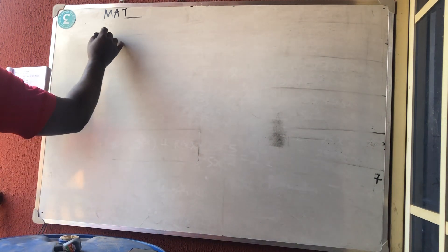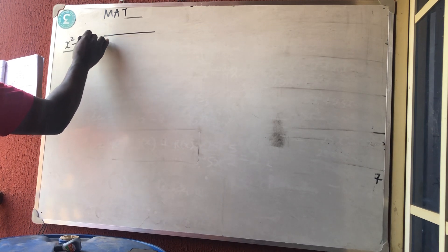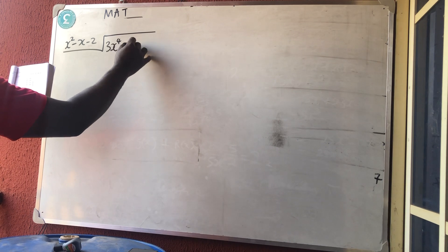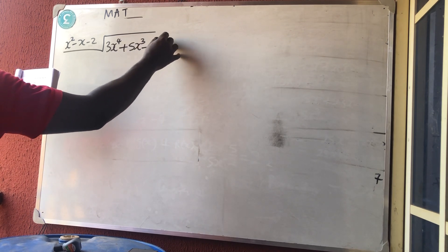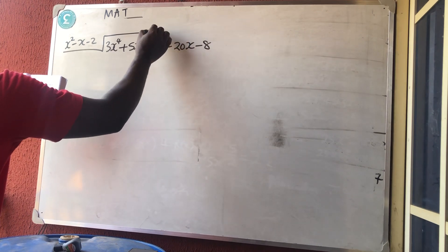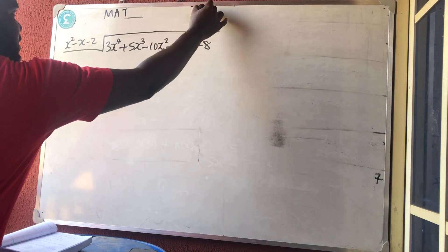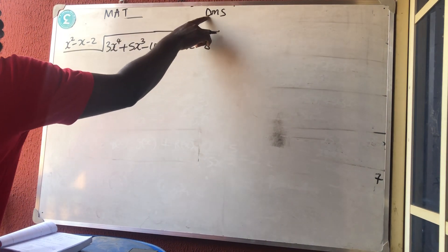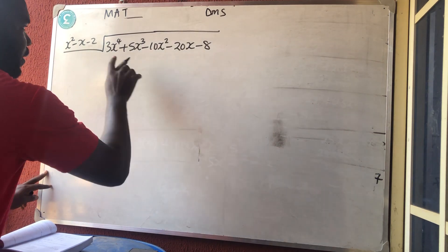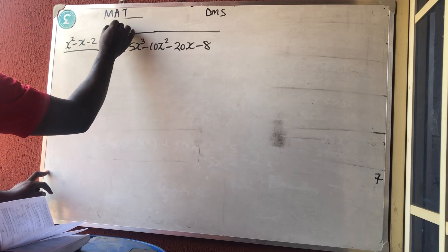Let's solve one more question. We're dividing 3x⁴ + 5x³ − 10x² − 20x − 8 by x² − x − 2. Using DMS, division: 3x⁴ divided by x² gives 3x². That goes into the quotient.